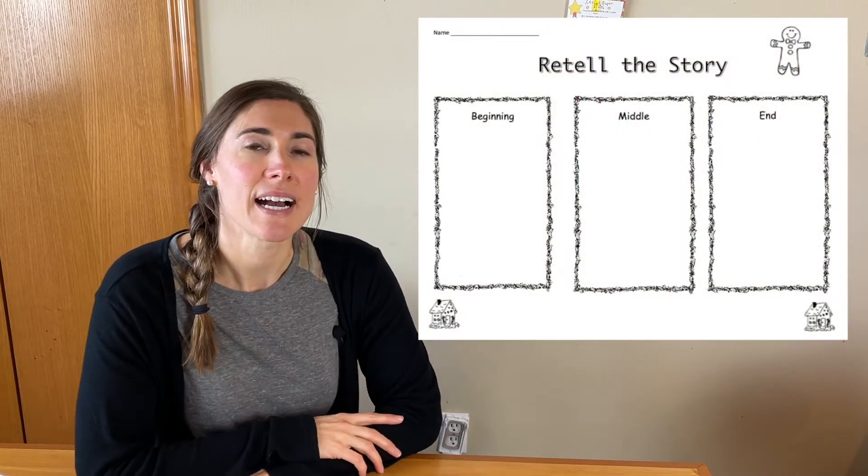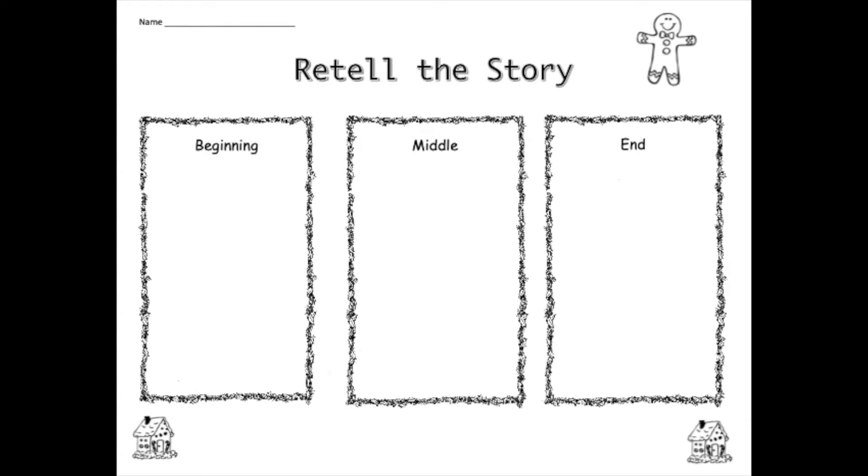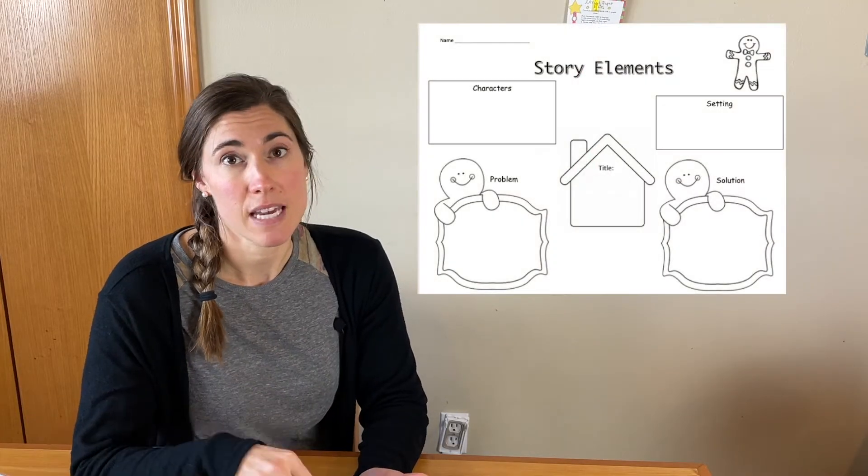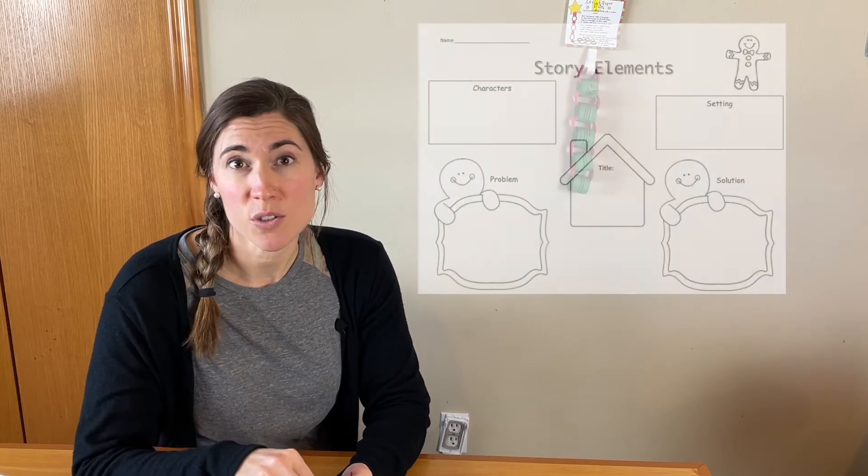I like a simple beginning, middle, and end retell — especially for younger ages, it's a little more simple for them to remember what they've read. These thinking maps are great for reading comprehension, which is a very important skill. Students need to be able to understand what they're reading or hearing. The beginning, middle, and end is a great one, and then also a story elements map where they identify the characters, setting, problem, and solution — which most gingerbread versions do a great job including.